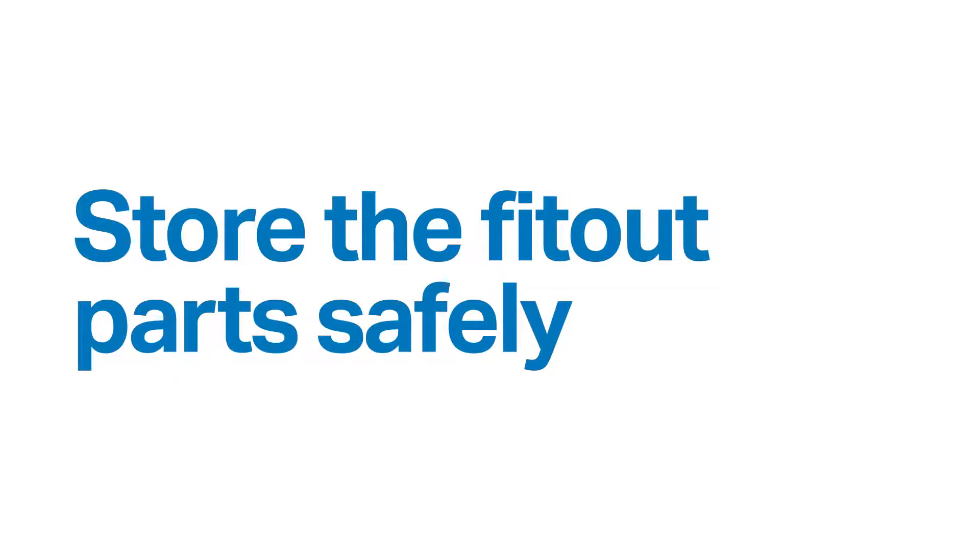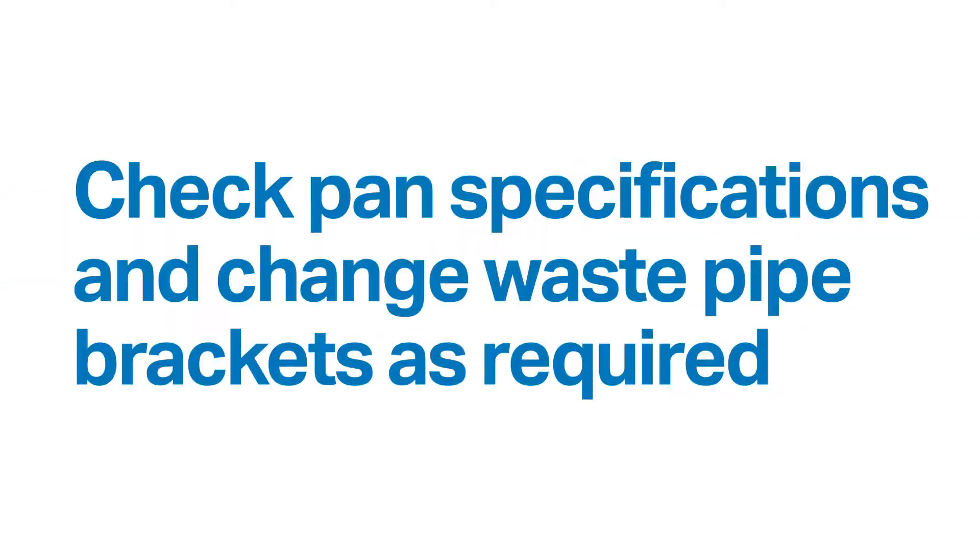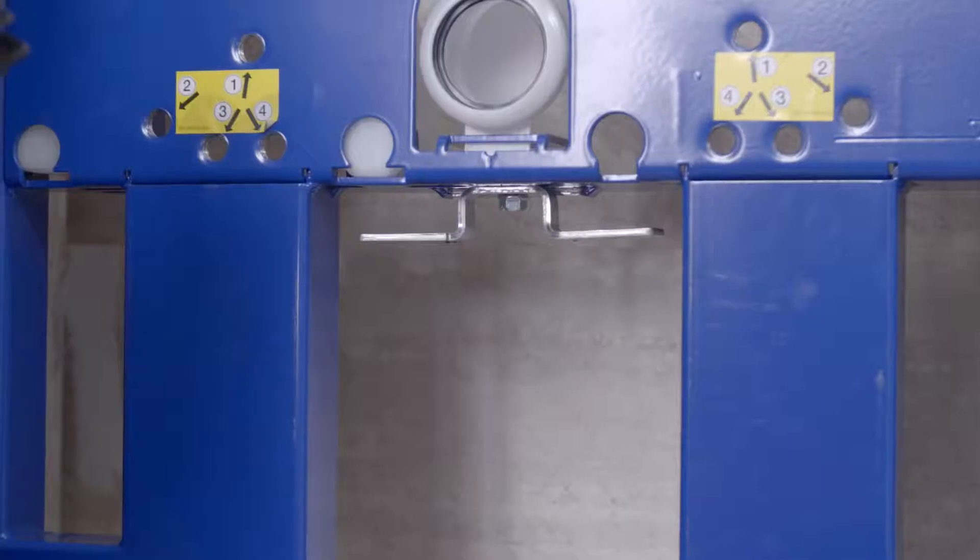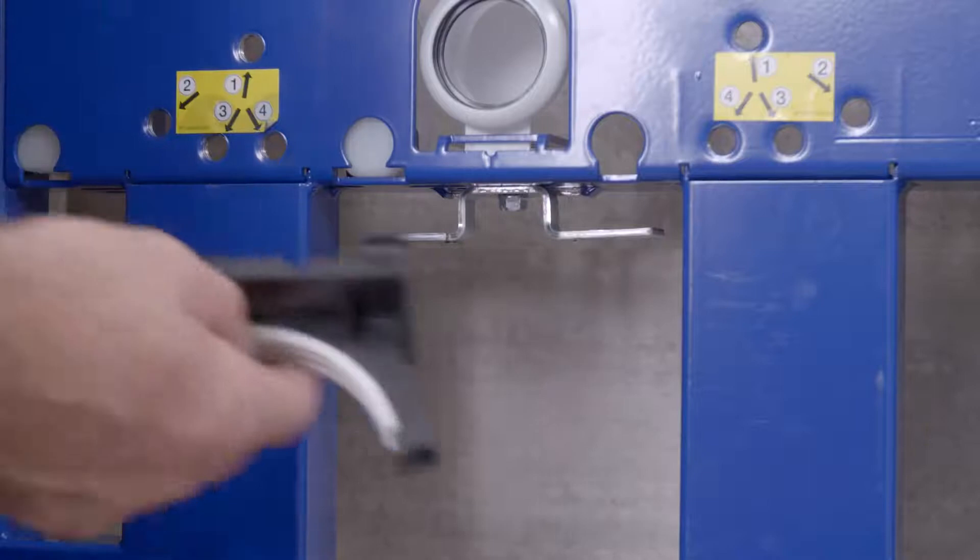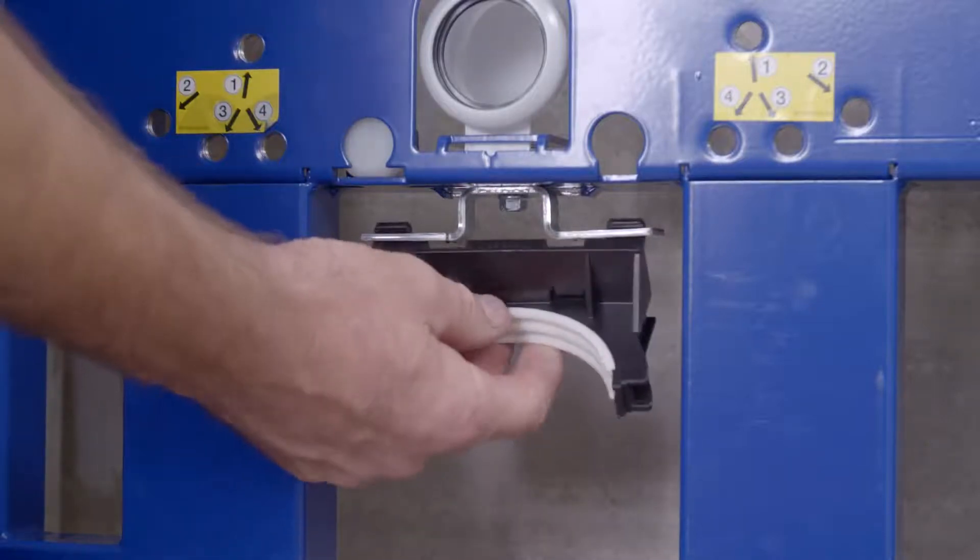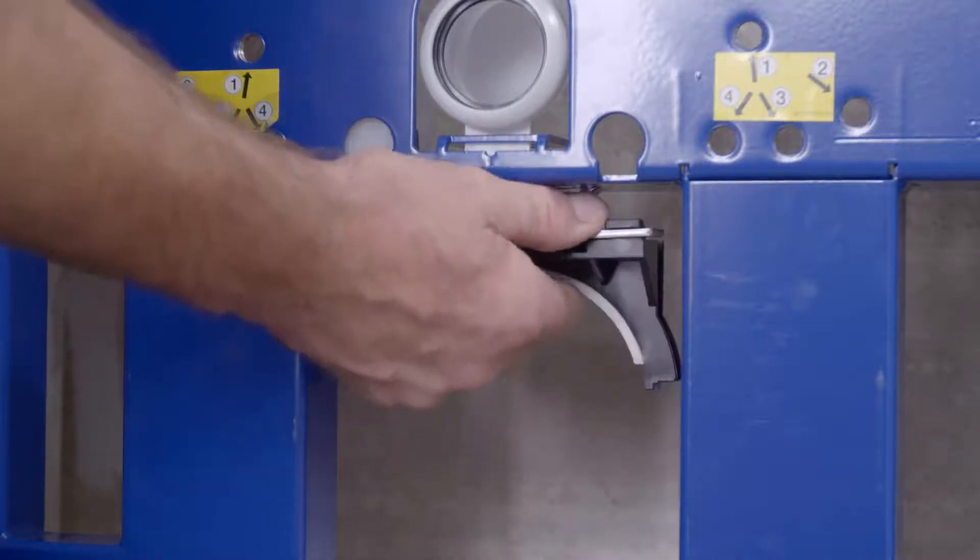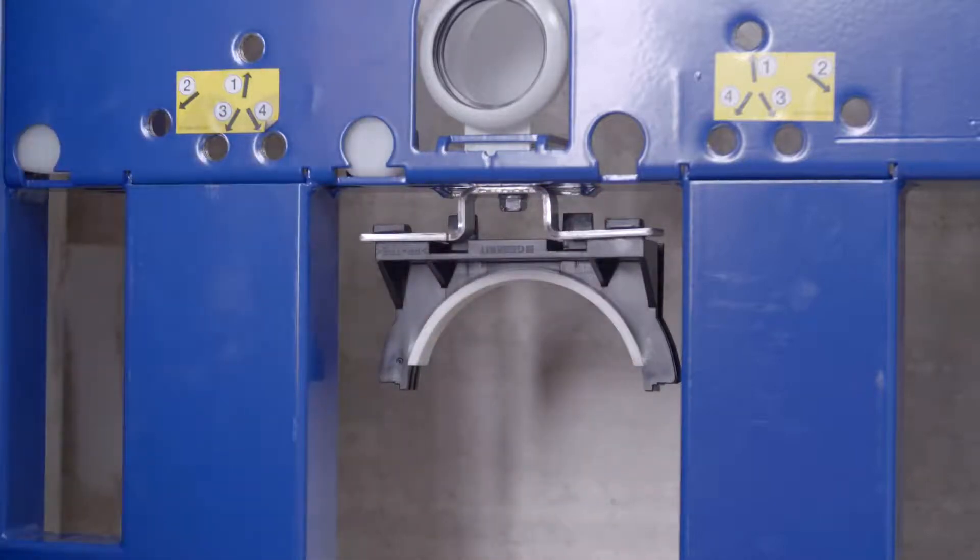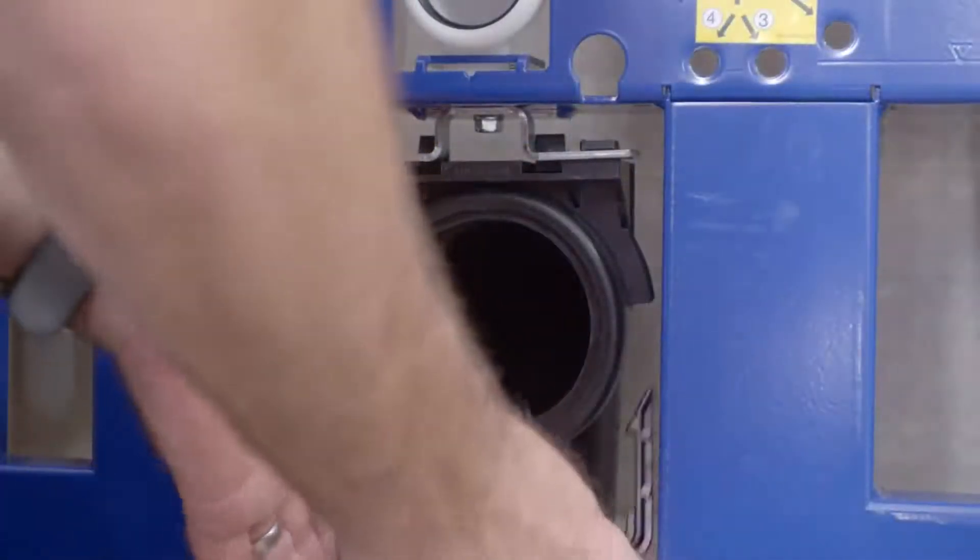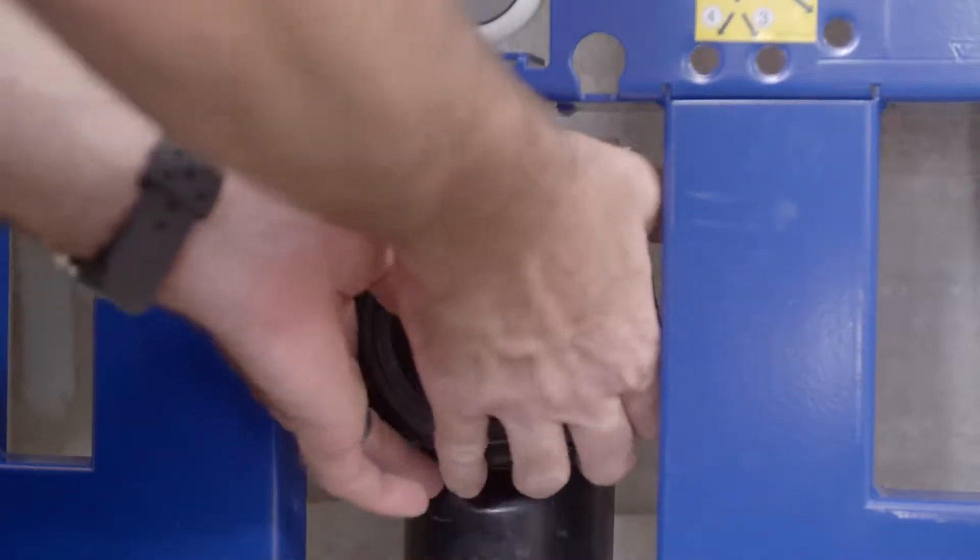Two waste pipe brackets are supplied with the cistern. Check the pan specifications and change if required. Position the top half of the waste retaining clip. It can be installed in two ways, forward or back, depending on the required waste position. Install the bottom half of the waste outlet bracket.